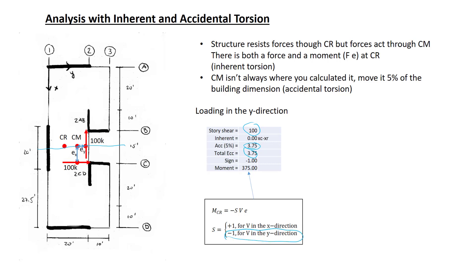The sign factor loading is in the y-direction, so it's minus 1. And now I multiply a negative sign times the sign factor times the shear times the eccentricity to get the moment here. The sign on that moment is positive, which indicates that it's a counterclockwise moment. That's consistent with the moment that's supplied by that force in the y-direction.